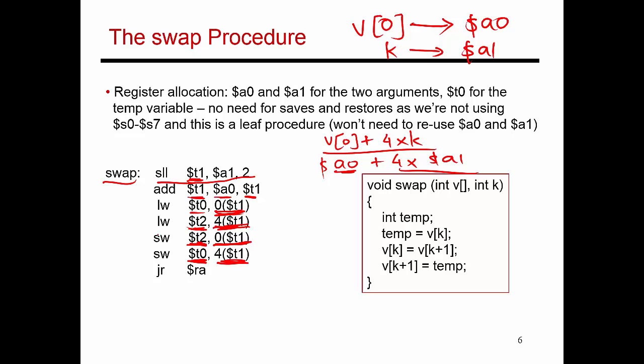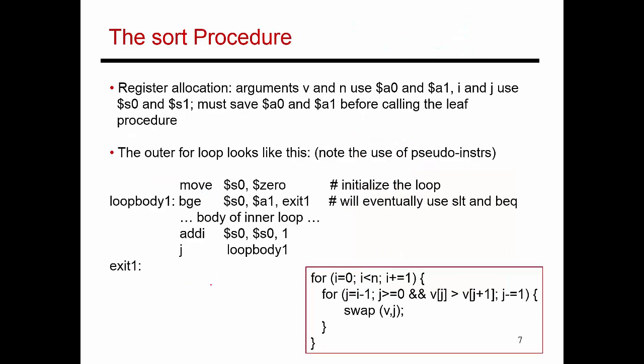These two stores are the same as these two loads, except that the register values and the addresses are being crisscrossed. Now that I've done the swap, I have to return, and that's with the usual jump. Now that we've seen procedure swap, let's look at the initial sort procedure, which was made up of those two nested for loops.